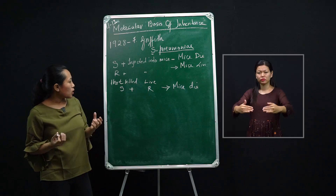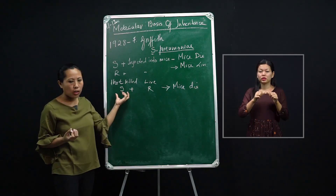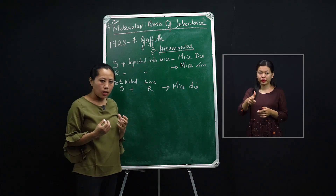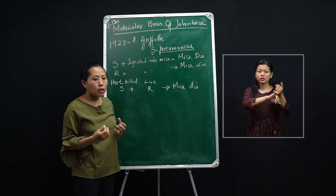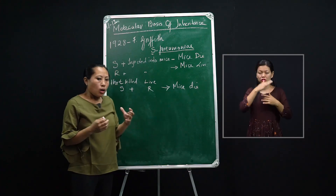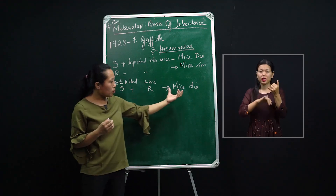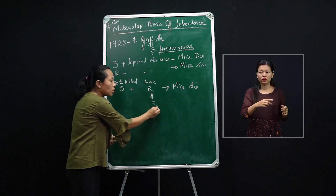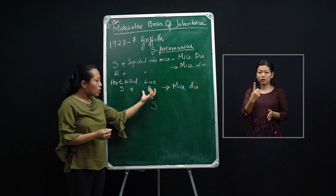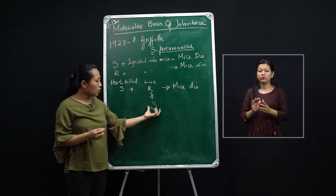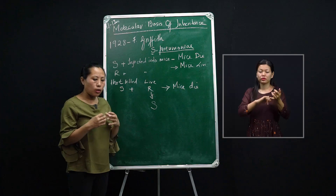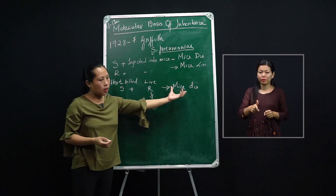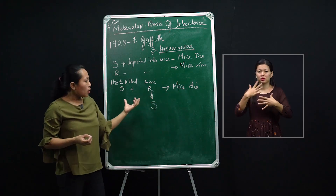In the next experiment, he took heat-killed S cells (the heat-killed virulent strain) and live R strain (the avirulent strain) and injected them into mice. The mice showed symptoms of pneumonia and the mice died. At the end of the experiment, he took extracts from those mice and found that the R strain had been converted into S strain — it developed the polysaccharide mucus coat and became virulent, causing pneumonia.